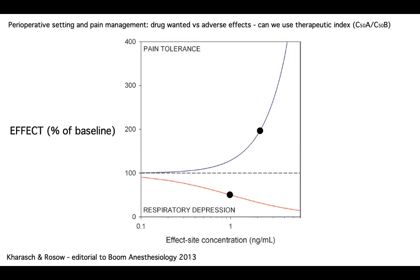How can you come up with one measure that combines both the analgesic effect and the harmful effects of opioids? There is the therapeutic index, which looks at the ratio of C50 of one endpoint versus the C50 of the other endpoint. However, the therapeutic index is just one endpoint ratio — at other concentrations, the therapeutic index would be very different, because these two curves are not necessarily parallel. So it's a very limited indicator.